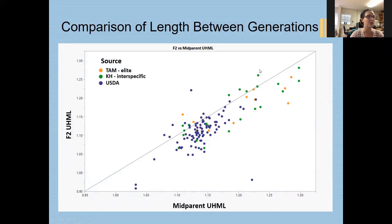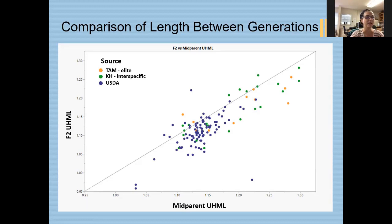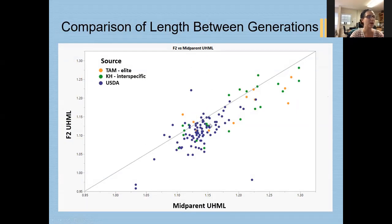Most of our green interspecific lines also fall below this line, though several come above — not unexpected, as they should be more diverse than our TAM elites. However, looking at them in the field, they have very poor yield in general and would require considerable work to introduce into our populations. Our USDA lines — the ones we're most interested in — have a body that falls below the line, but a number fall above, and several of which perform very well. These are the ones we most want to look at going forward as a way to improve our populations.